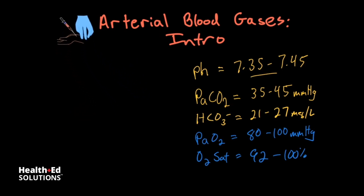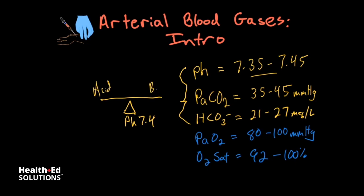The first three values tell us about acid-base balance. pH, normally 7.4, tells us about the balance between acids and bases in the blood. It can reflect derangements of the respiratory system, kidney function, and toxicities that can cause the pH to fall below 7.35 or rise above 7.45.